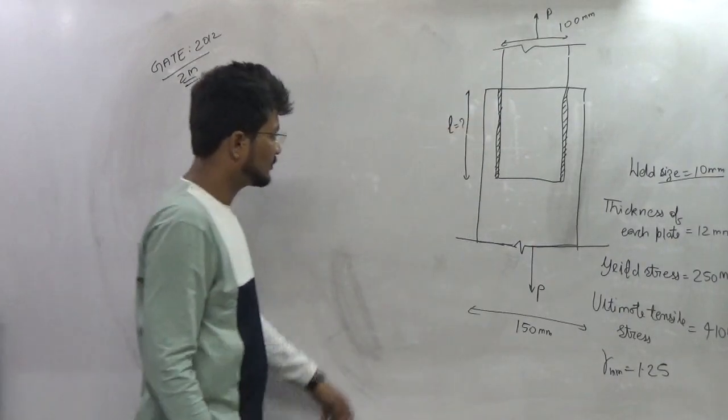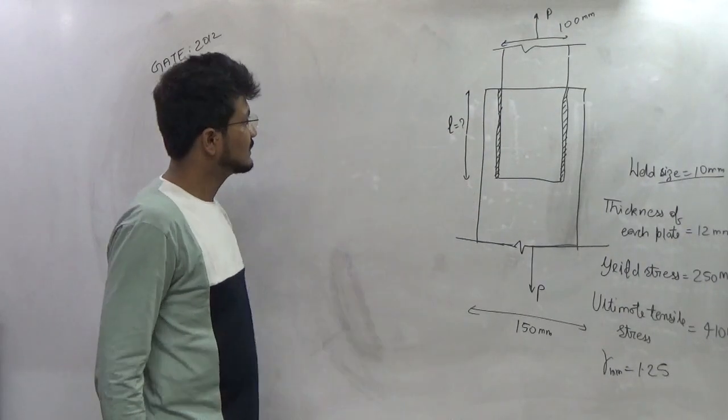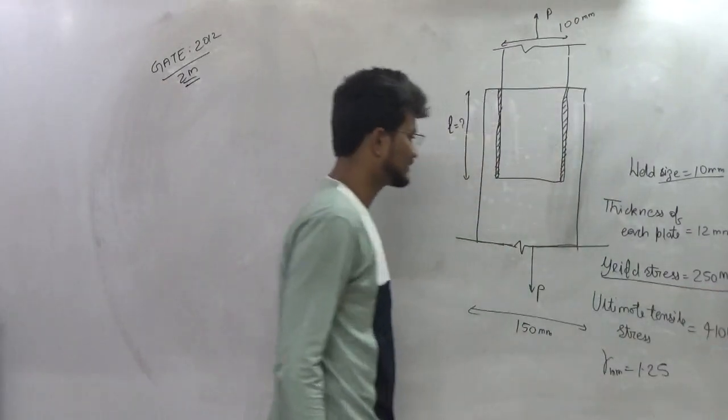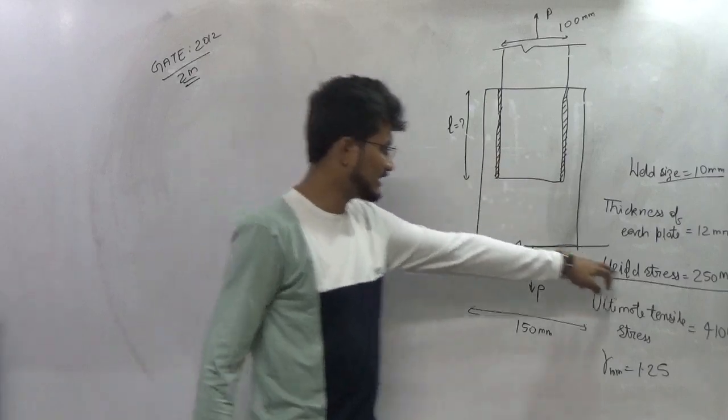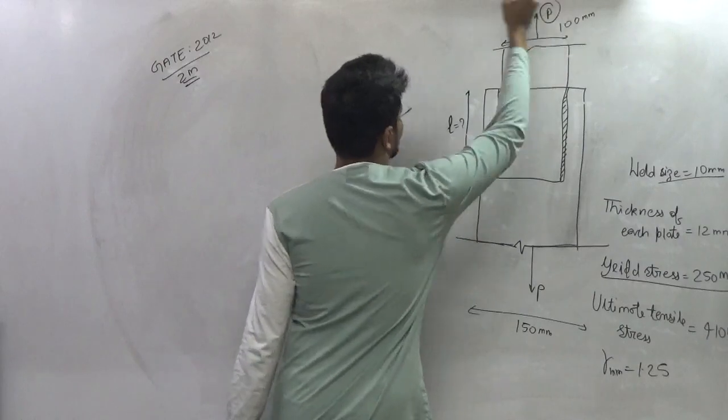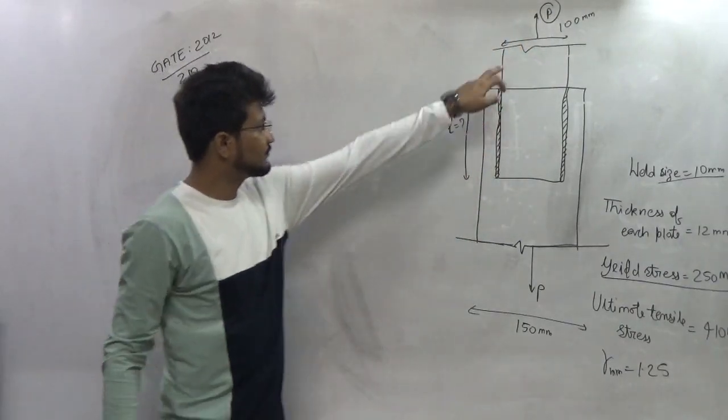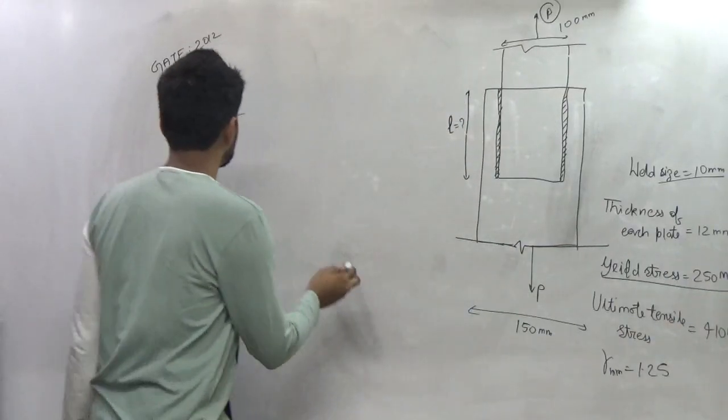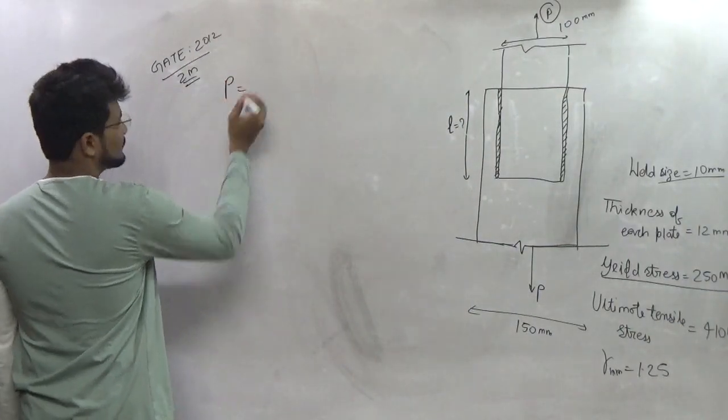So this we have to find out. So how to solve these particular type of questions? What we know? We know the yield stress of the plate. These two plates are having yield stress of 250 MPa. Now the maximum value of force that can be transmitted by this plate having yield stress equal to 250 MPa will be equal to P will be given by